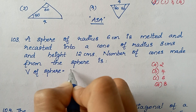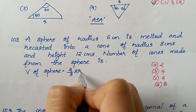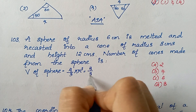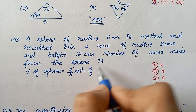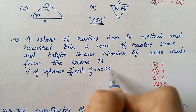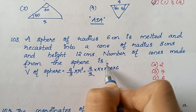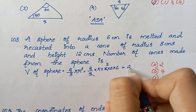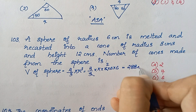The volume of the sphere formula is (4/3)πr³. Substituting r = 6: (4/3) × π × 6³, which simplifies to 288π.